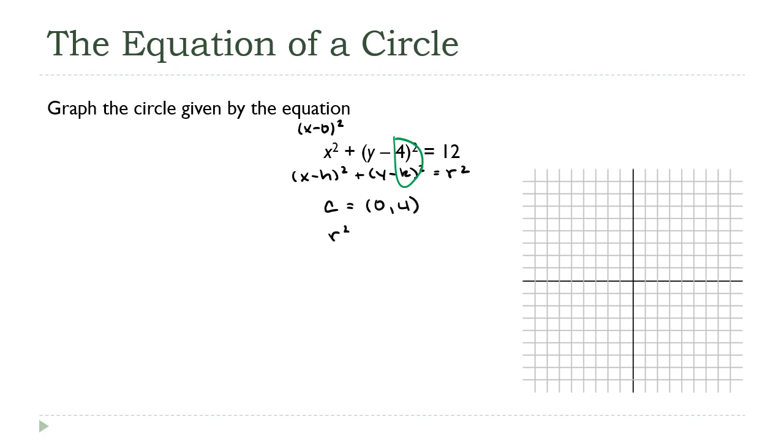Here you have to be a little careful. A common mistake I see is dudes want to make 12 the radius, right? It's not. r squared is equal to 12, which means r is the square root of 12, which is 2 times the square root of 3.